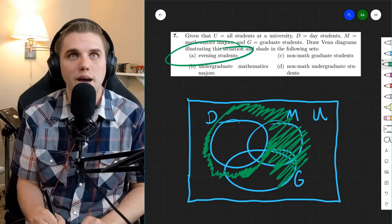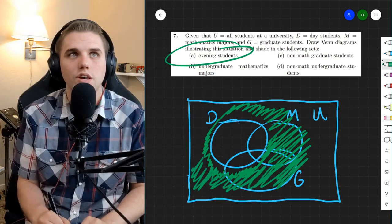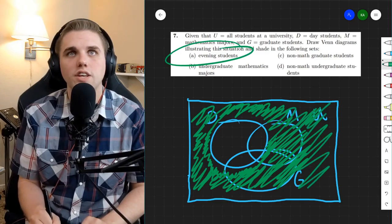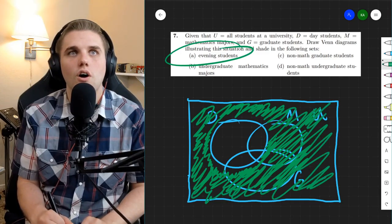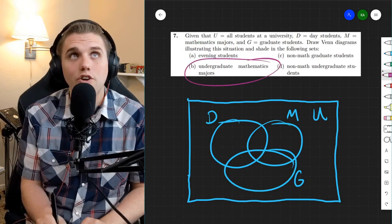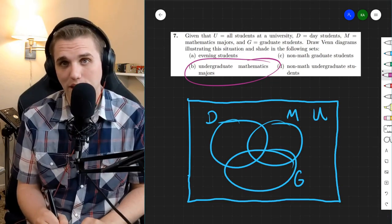So all these math majors, all these grad students, and all these other majors and stuff that are all evening students. All of these are evening students. So this region would represent evening students. What about undergraduate math majors? So now it's not graduate and they're in math.